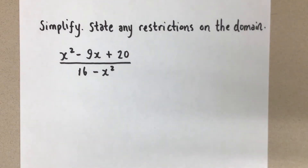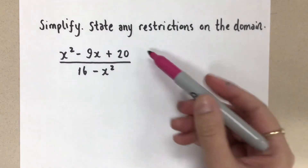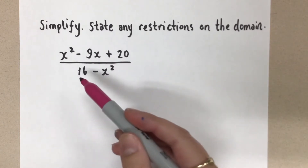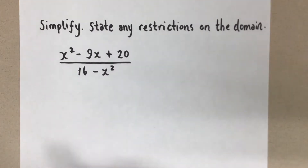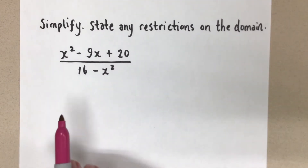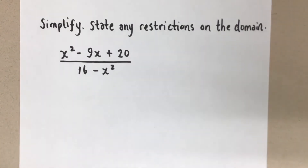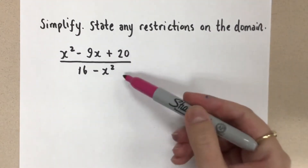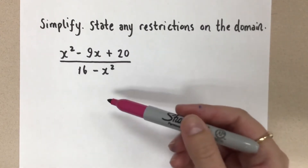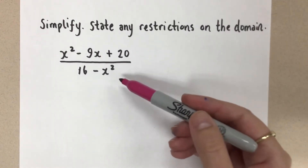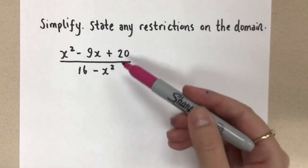Hi everyone, Mrs. A here. We are looking at simplifying rational expressions. I have here a rational expression where in the numerator we have a quadratic, and in the denominator we have another quadratic. We want to simplify these — we are looking for opportunities to divide out any common factors in the numerator and denominator. But right now both are in standard form.